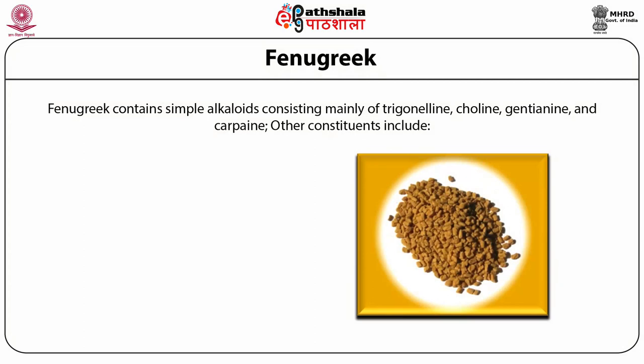Fenugreek contains simple alkaloids consisting mainly of trigonelline up to 0.13%, choline 0.05%, gentianine, and carpaine. Other constituents include saponins that yield on hydrolysis 0.6 to 1.7% steroid, flavonoids including vitexin, fixed oils about 5 to 8%, consisting mainly of linoleic, oleic, and linolenic acids.